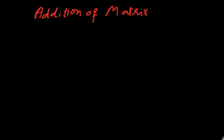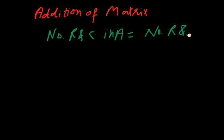We can add two matrices if the matrices are equal matrices, meaning if the number of rows and columns in matrix A is equal to the number of rows and columns in matrix B. At that time we can add these two matrices.